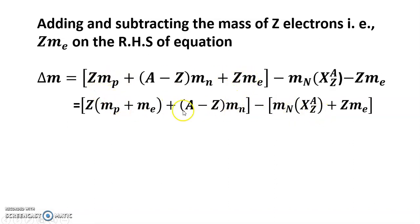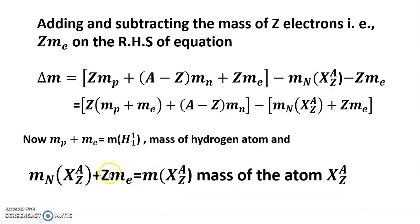minus m_N of X_Z^A plus Z m_e, because both are added and this portion is hydrogen atom. You see, m_p plus m_e equals m of H_1^1, mass of hydrogen atom. And m_N of X_Z^A plus Z m_e is mass of the atom.